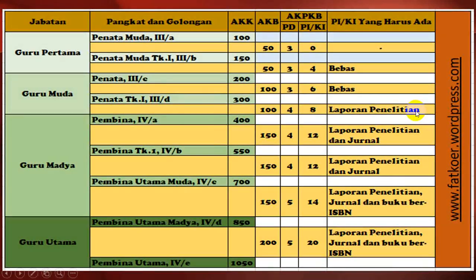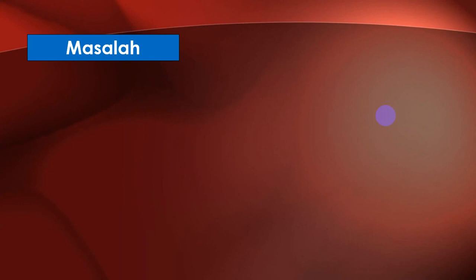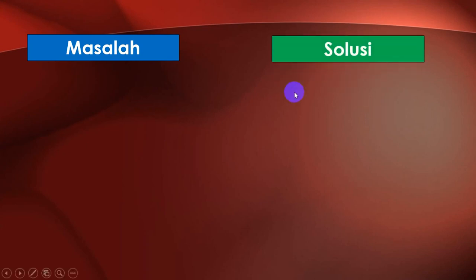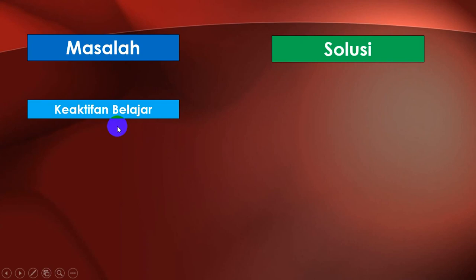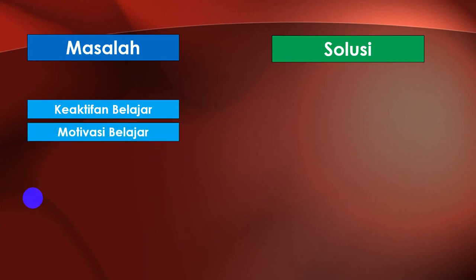Sekarang masuk ke materi inti: bagaimana memunculkan ide membuat judul PTK. Kita mulai dari masalah. Masalah itu sering kita jumpai di kelas, di pembelajaran kita. Cuma kadang-kadang kita tidak bisa atau kurang mampu menyatakan sebenarnya masalah itu apa. Contoh masalah adalah keaktifan belajar. Kita tahu bahwa kadang-kadang anak-anak itu malas belajar, disuruh bertanya tidak mau bertanya, suruh menjawab tidak mau menjawab.